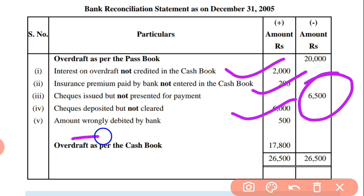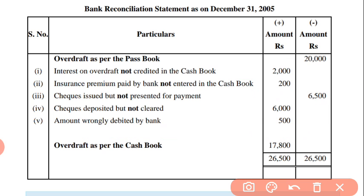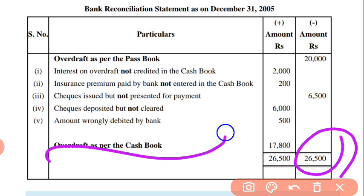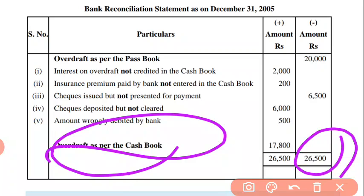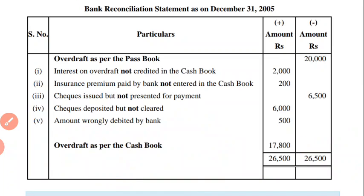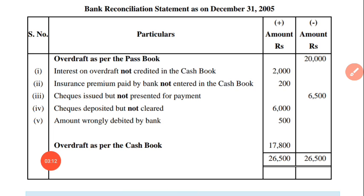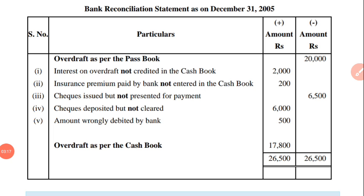Amount wrongly debited — as per cash book it is minus, so in the passbook it becomes plus. So the sum of the credit side will be 26,500, and the debit is subtracted. Overdraft as per cash book is 17,800. So, is it clear? I think everyone has understood. Thank you students for watching this video. Bye-bye.